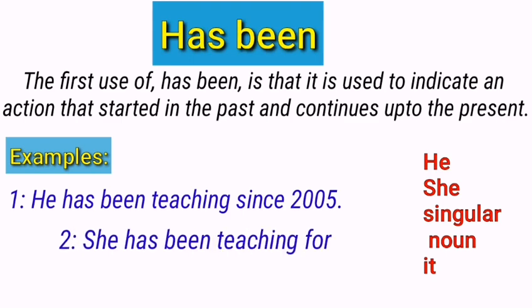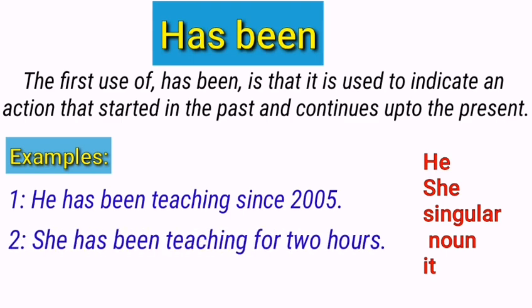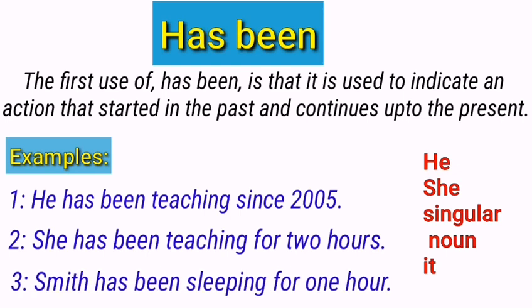She has been reading for two hours. Here 'has been' is used with the subject 'she,' and it is also a present perfect continuous tense. The next example is: Smith has been sleeping for one hour. 'Has been' is used to form a present perfect continuous, meaning that Smith started sleeping one hour ago and is still continuing.